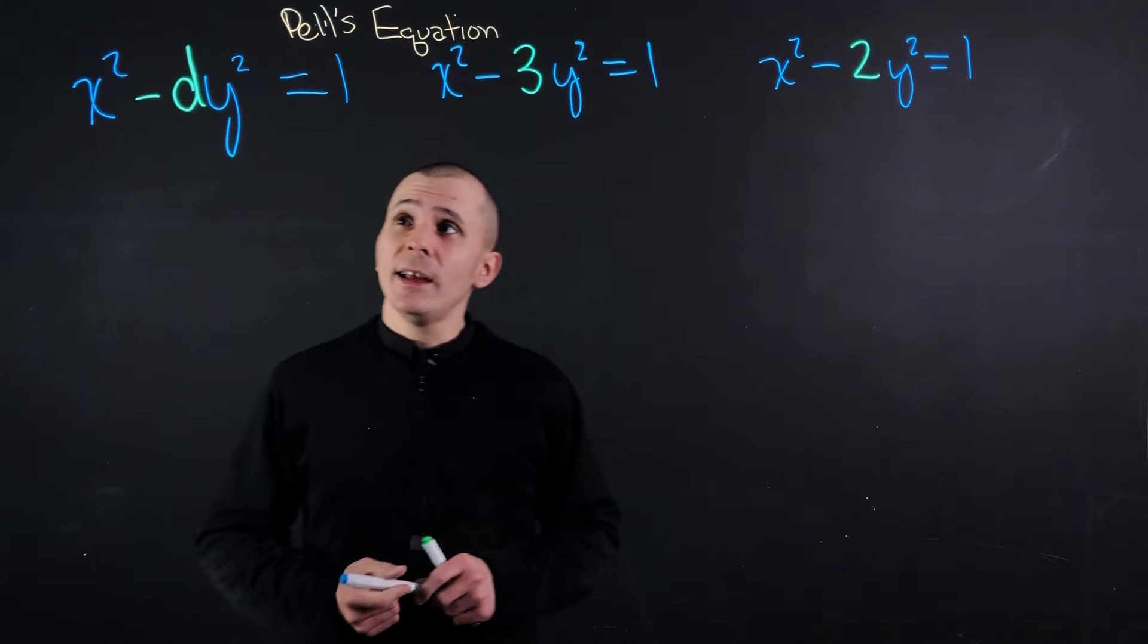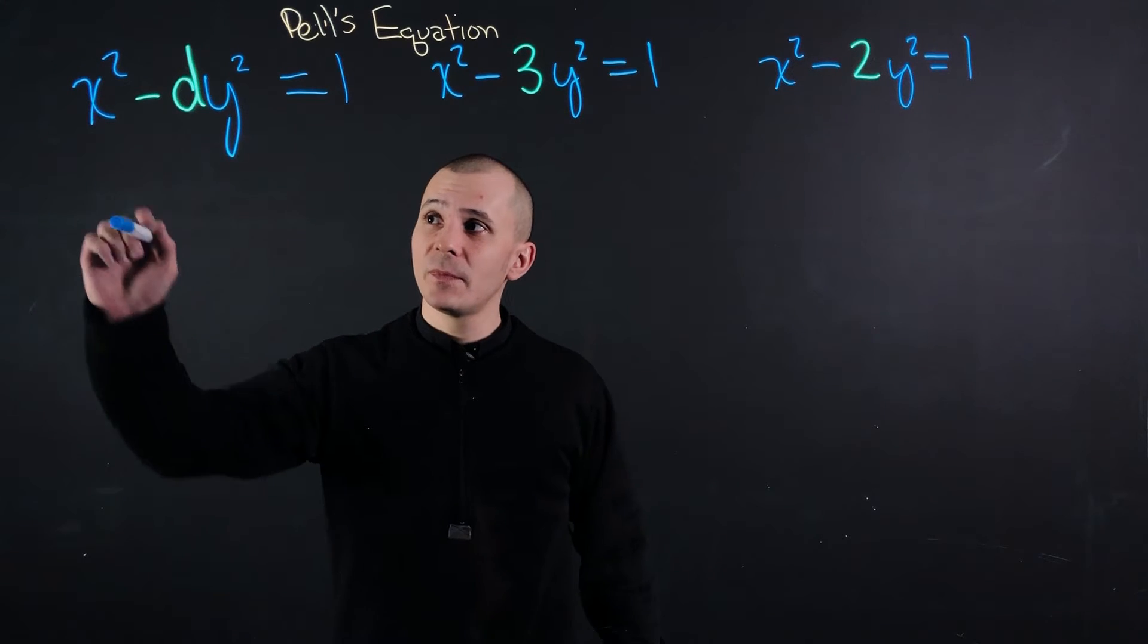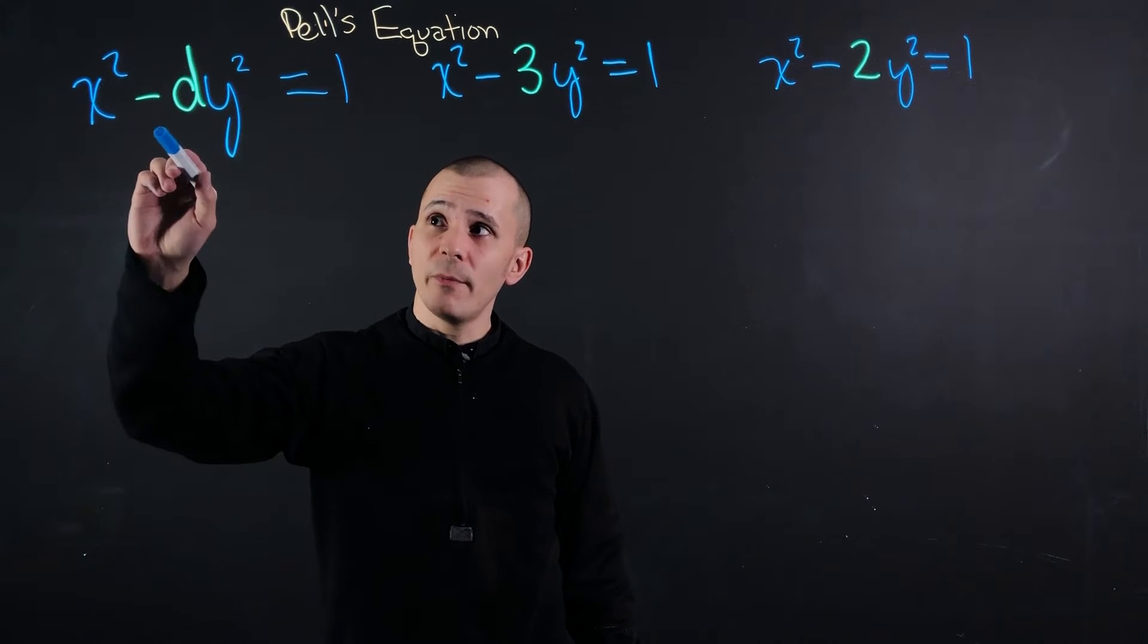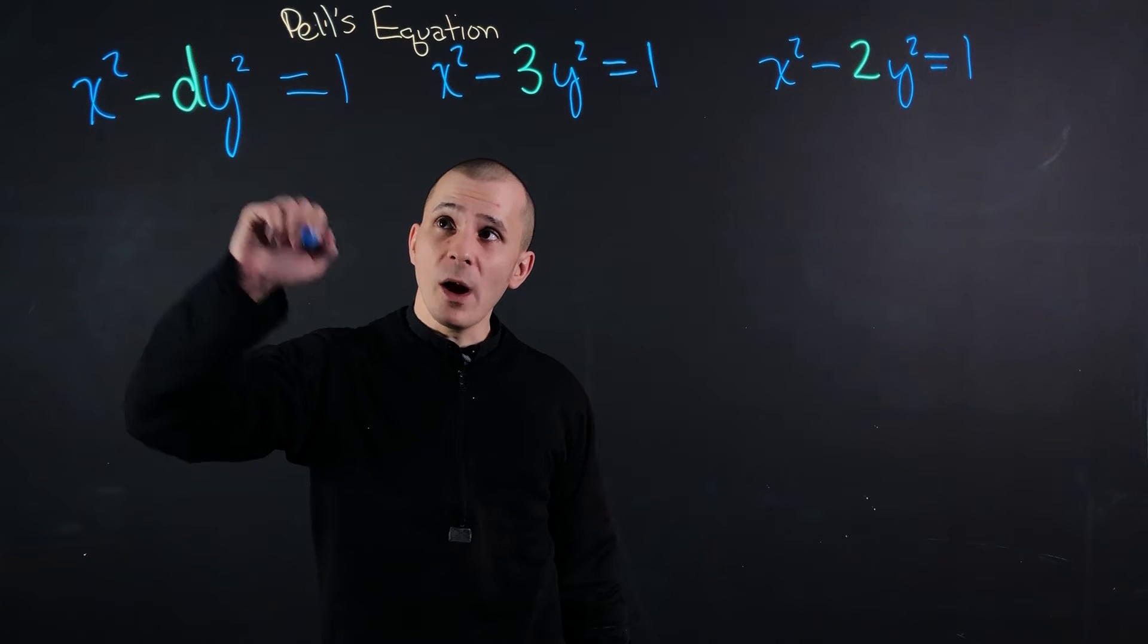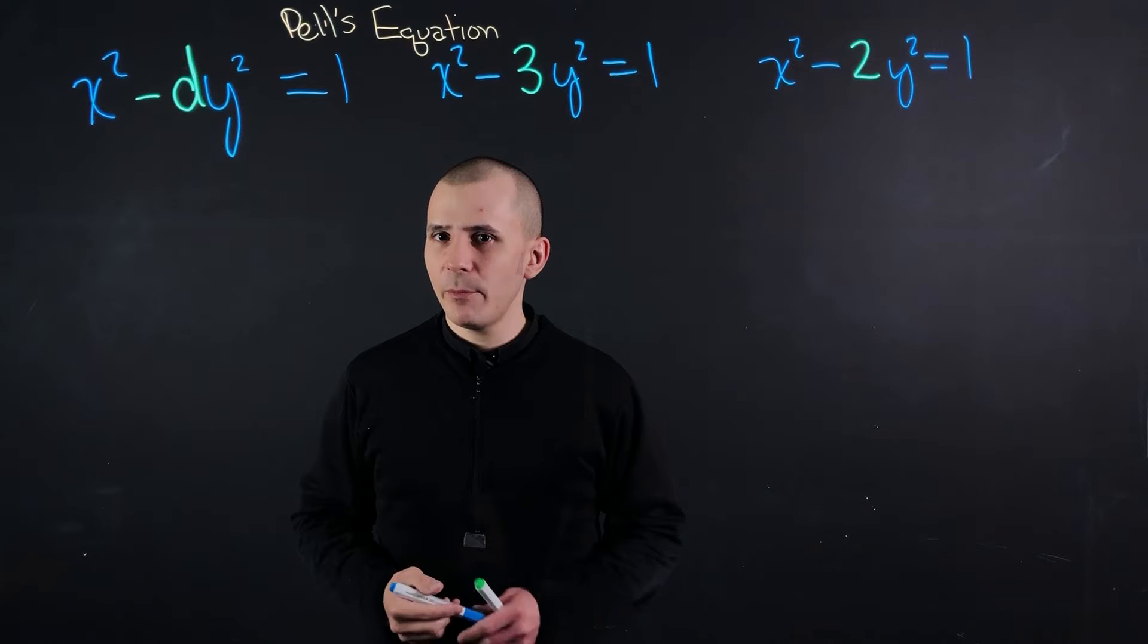All right, so what is Pell's equation? Pell's equation is x² - d·y² = 1. Well how can that be?